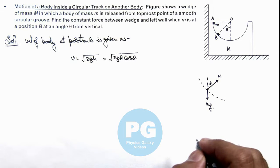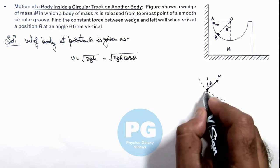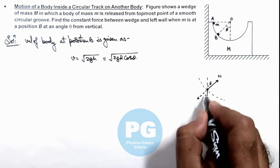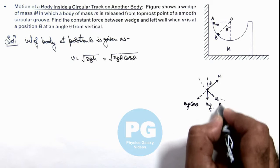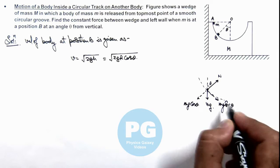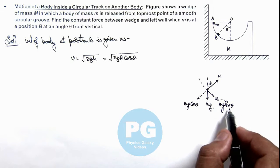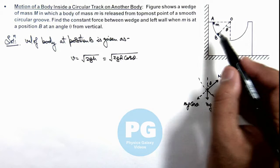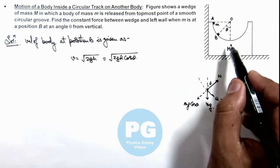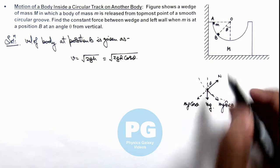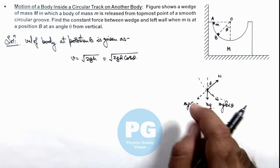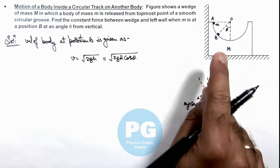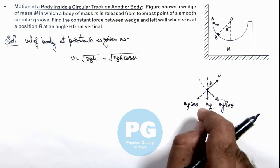In this situation, mg is also having two components so one would be mg cos theta here and other would be mg sin theta here. We can see mg sin theta will be responsible for the tangential acceleration in the body while sliding on the surface of the groove, and mg cos theta and N will mutually result in centripetal force acting on body.